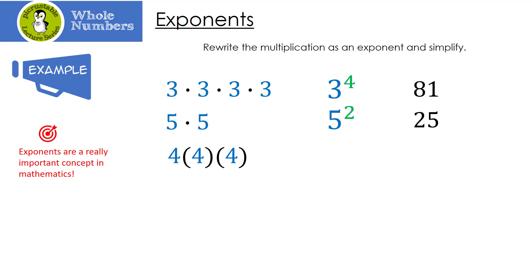This also means multiplication. This one is four times four times four. Can you guess what we would write as an exponent? Four to the third power. I'm taking the number four and I'm multiplying it three times: four times four times four. Four to the third power gives us 64.